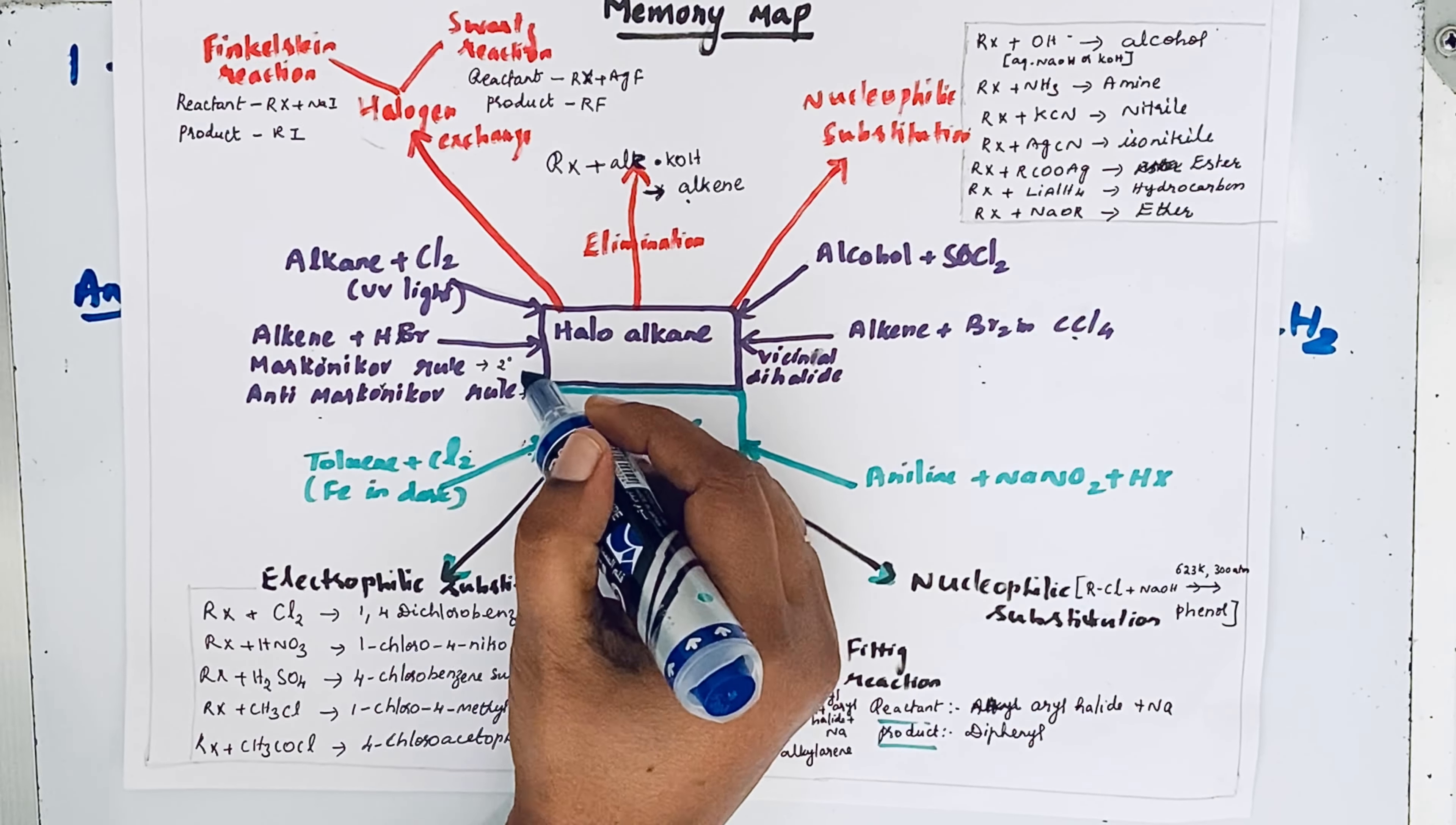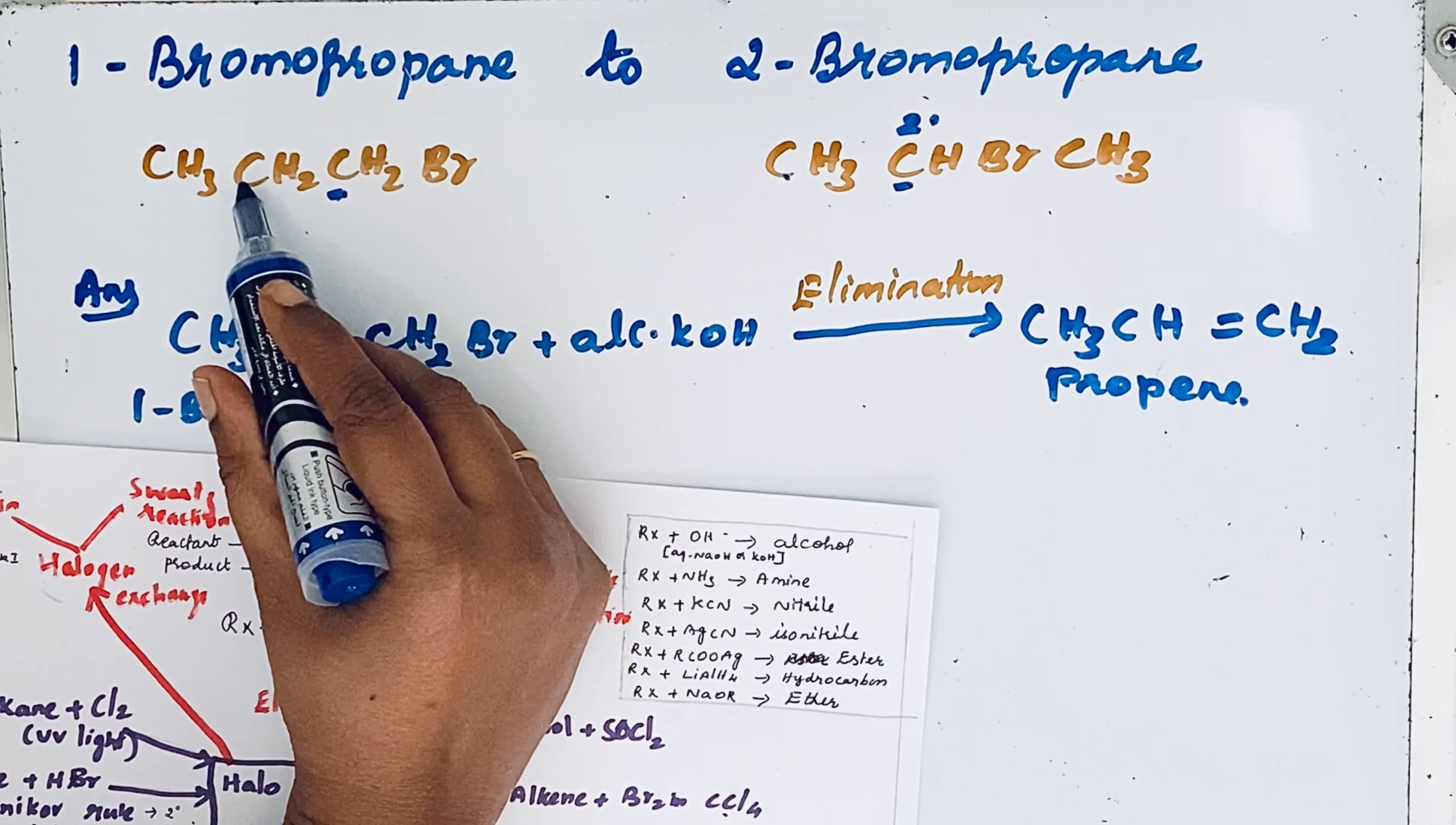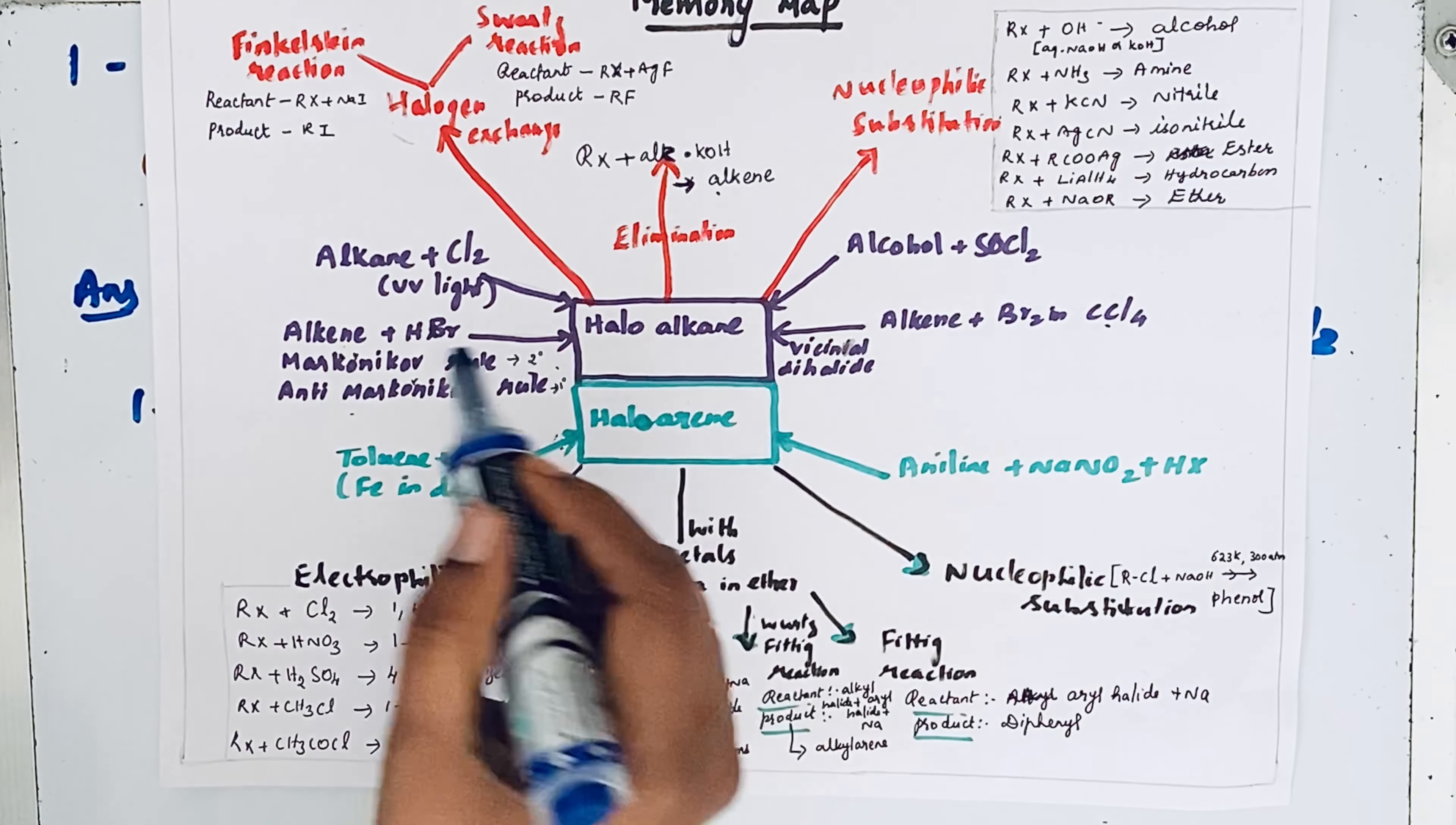Now to bring that alkene to secondary carbon. Carbon is attached to two other carbons—for example, this carbon is attached to this carbon and this carbon, so this is secondary. But this carbon is attached to only one carbon, so it is primary. We want to convert that primary to secondary, so this reaction will undergo Markovnikov addition with HBr.